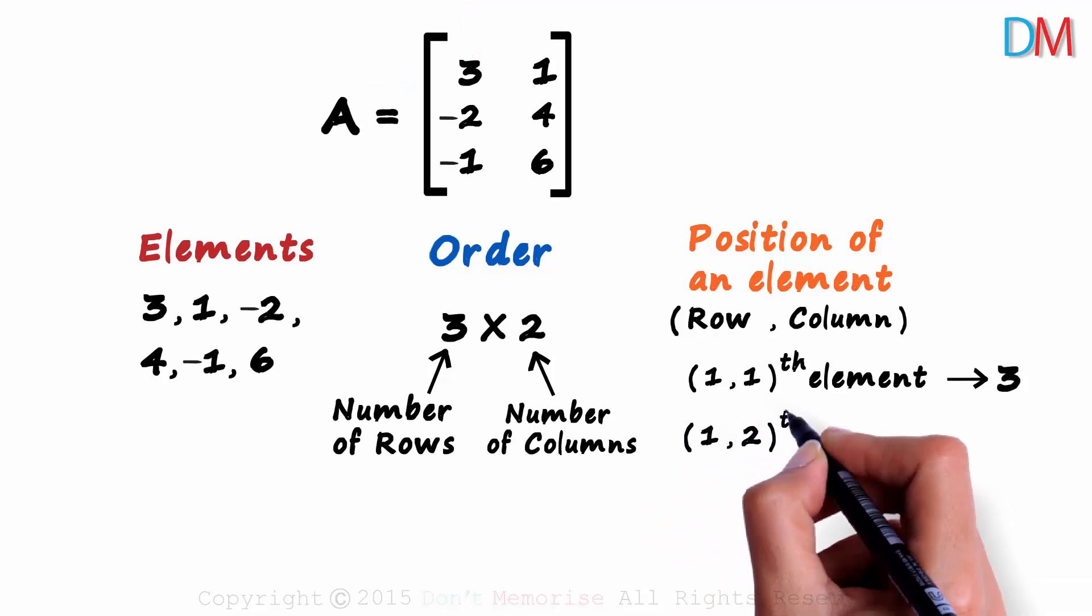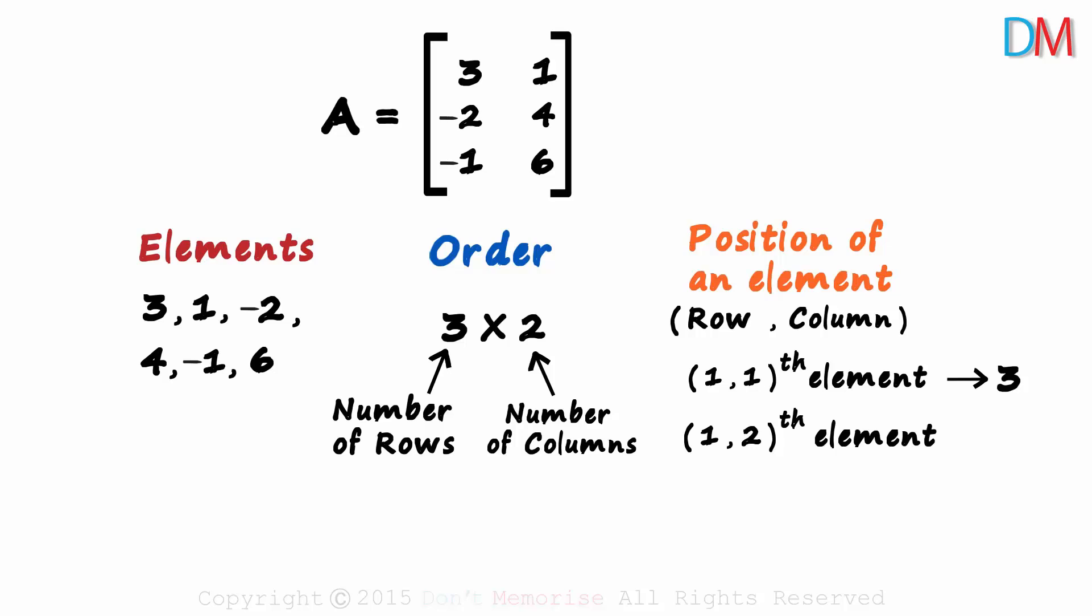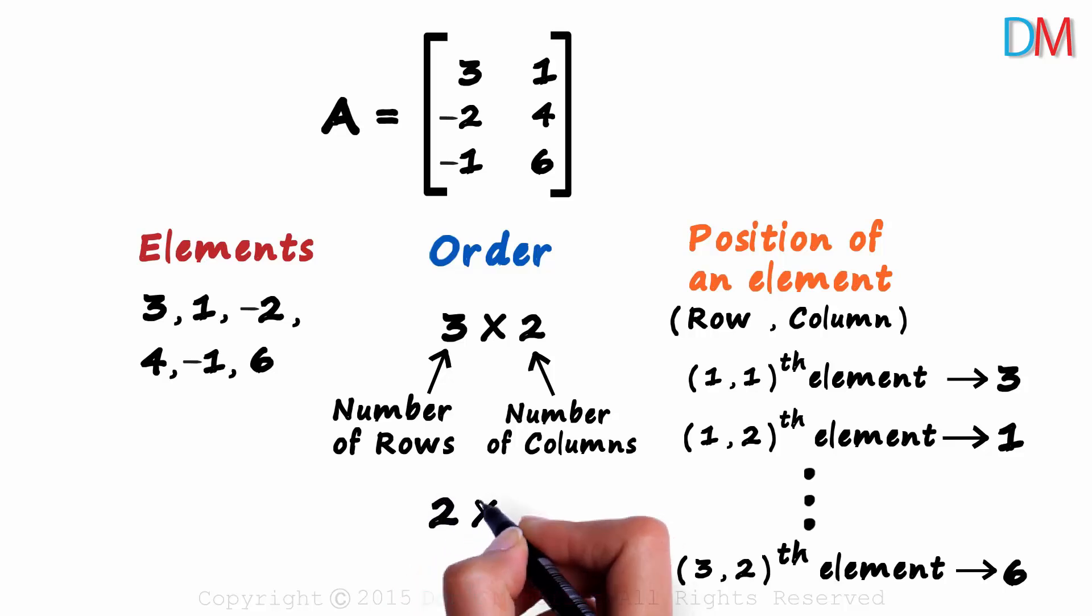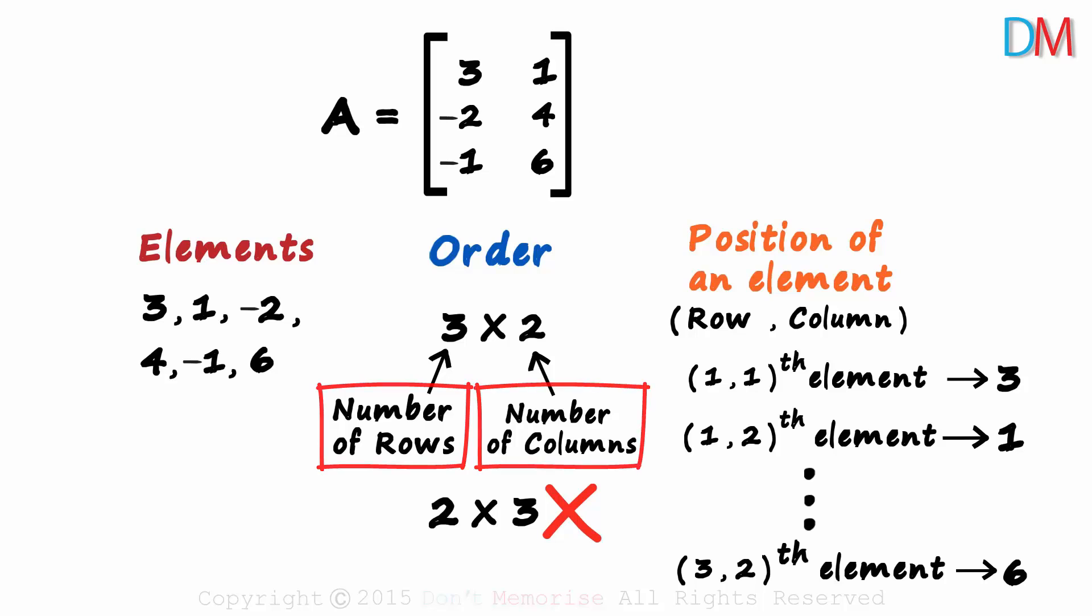So what is the one, two-eth element in this matrix? First row and the second column. It will be one. This goes on and the last element would be the three, two-eth element. Third row and the second column. It will be six. The row number comes first and then the column number. And the same applies to the order of the matrix: number of rows by the number of columns. Writing the order as 2 by 3 will be incorrect. The number of rows will always come before the number of columns.